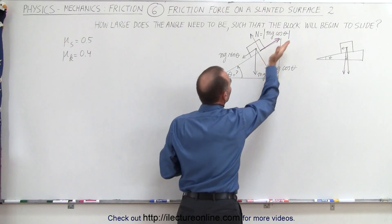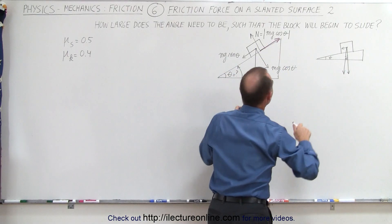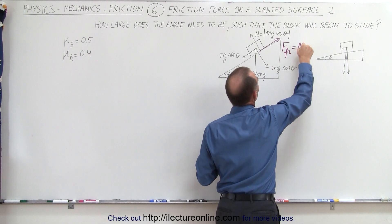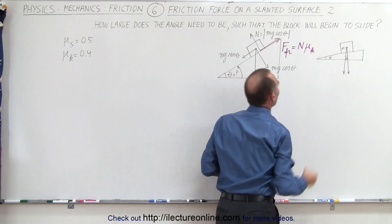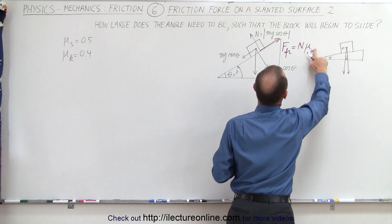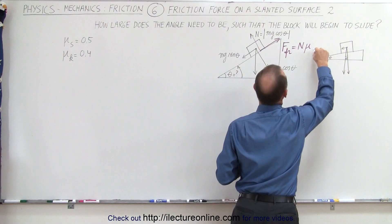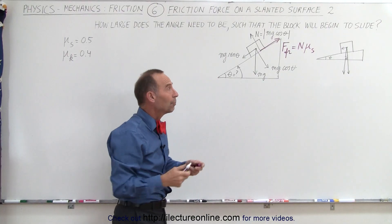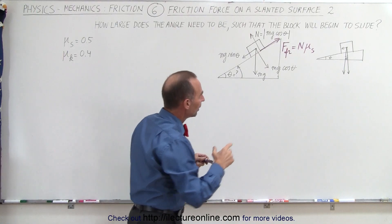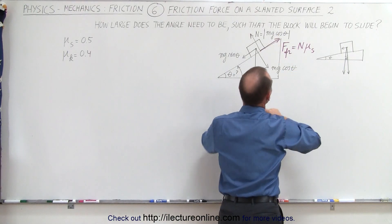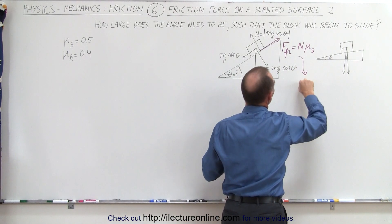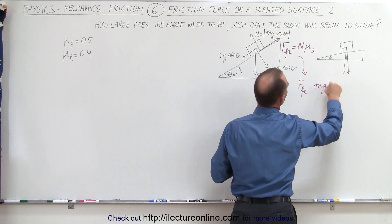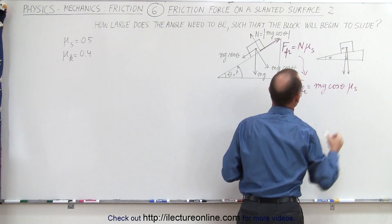And the magnitude of the friction force is going to be equal to the normal force times the coefficient of friction. In this case, we're going to be dealing with the static coefficient of friction because we're starting out with the block not moving. Since the normal force is equal to mg cosine theta, we can then say that the friction force can be written as mg cosine of theta times mu sub s.